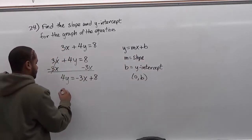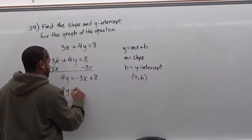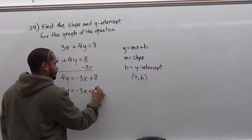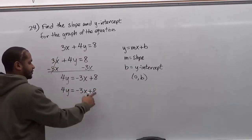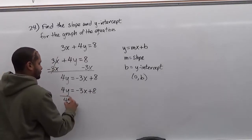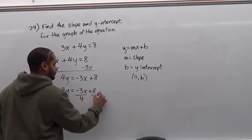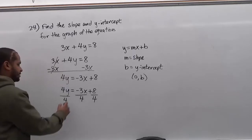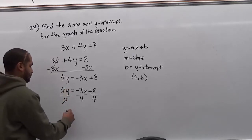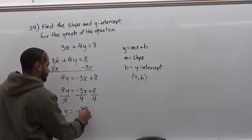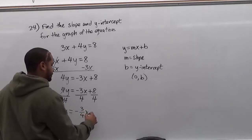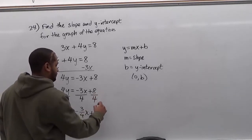Now the last step we want to do is divide everything by the coefficient of the y. So here we're going to divide every single thing by 4 and simplify. So these 4's go away. We get y equals negative 3 quarters x plus 8 divided by 4 is 2.